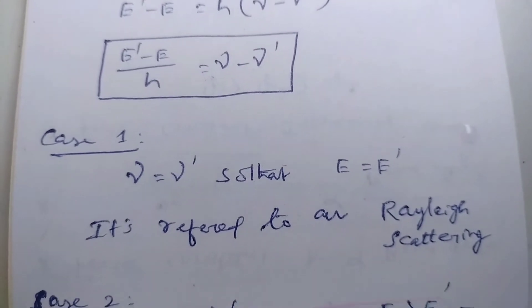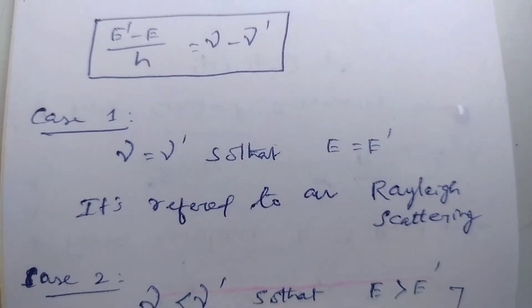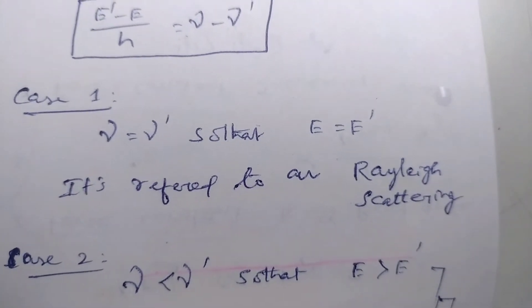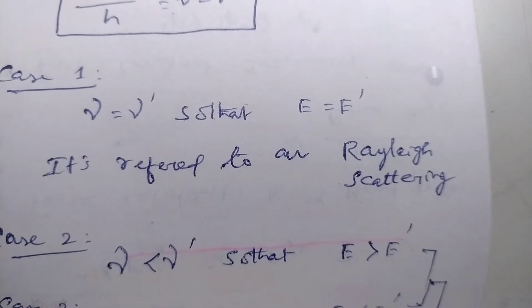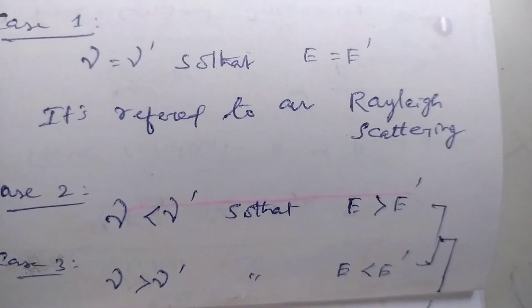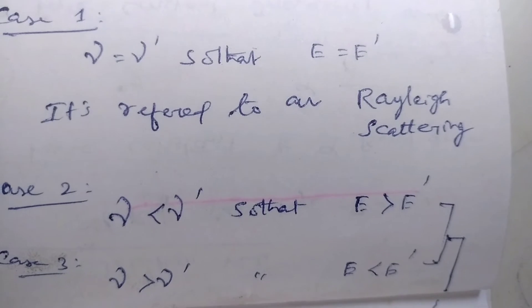For case 1, nu equals nu prime so that E equals E prime. This refers to Rayleigh scattering. Case 2: nu less than nu prime, so that E greater than E prime. Case 3: nu greater than nu prime, so that E less than E prime. These two cases are called Raman scattering or Raman effect.